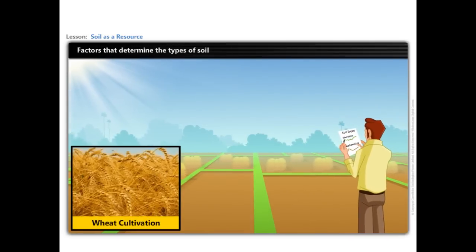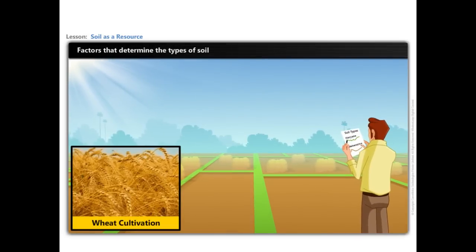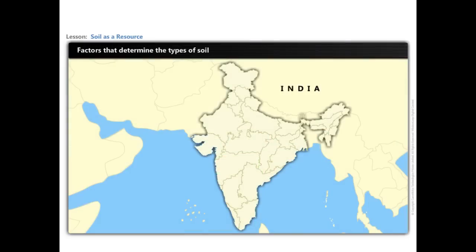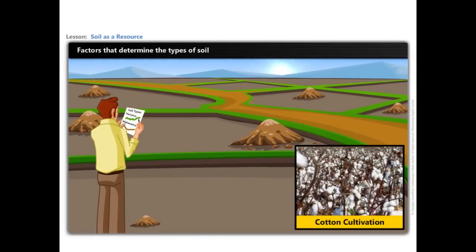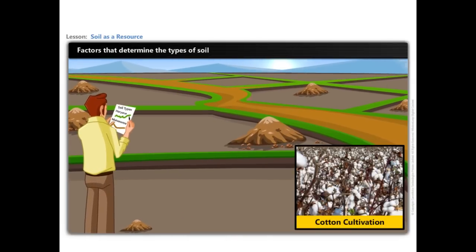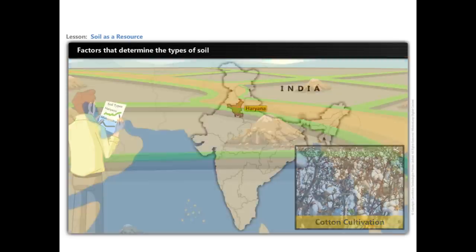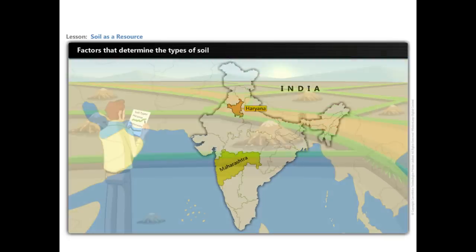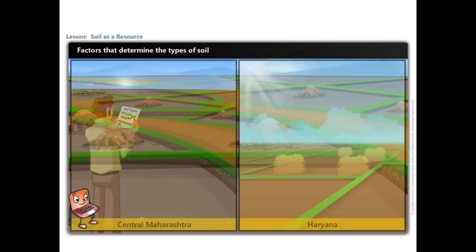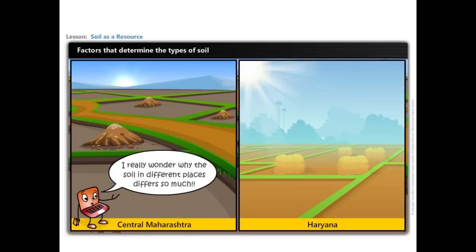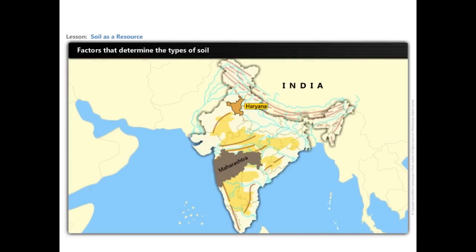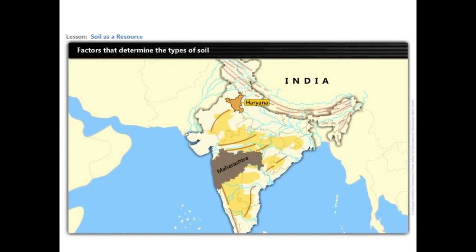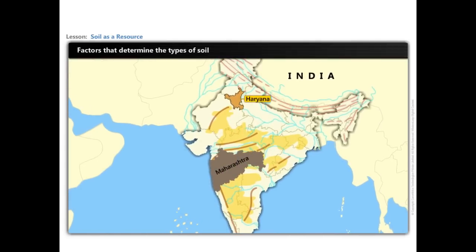Jack is on a study tour visiting various places in our country. He is in a village in Haryana and is surprised to see the type of soil, which is so different from the village in central Maharashtra he visited last week. He wonders why the soil in different places differs so much. Let us try to get an answer by looking at the relief map of our country.